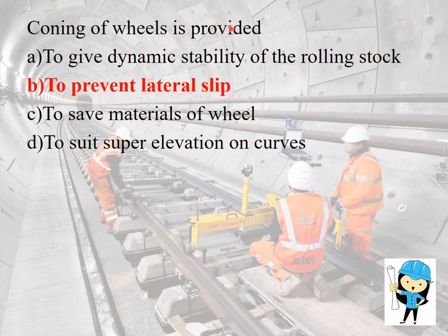Coning of the wheel is provided to prevent lateral slip, because coning of the wheel maintains the vehicle in the central position with respect to the track.